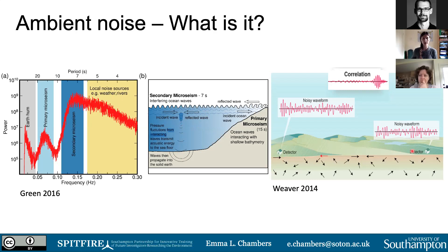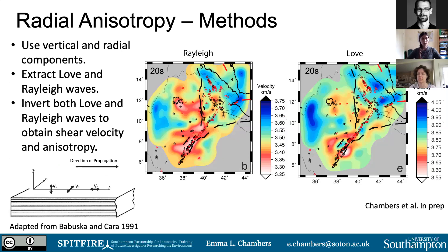What this looks like initially is just a noisy waveform with nothing coherent in it. But if we cross-correlate the detectors, we can get a coherent cross-correlation function — this gives us an approximation of the Green's function, indicating the seismic properties of the Earth between two stations. I use the vertical component to extract Rayleigh wave information, and the north and east components to extract Love wave components. With both of these for phase velocity, we can invert for absolute shear velocity.